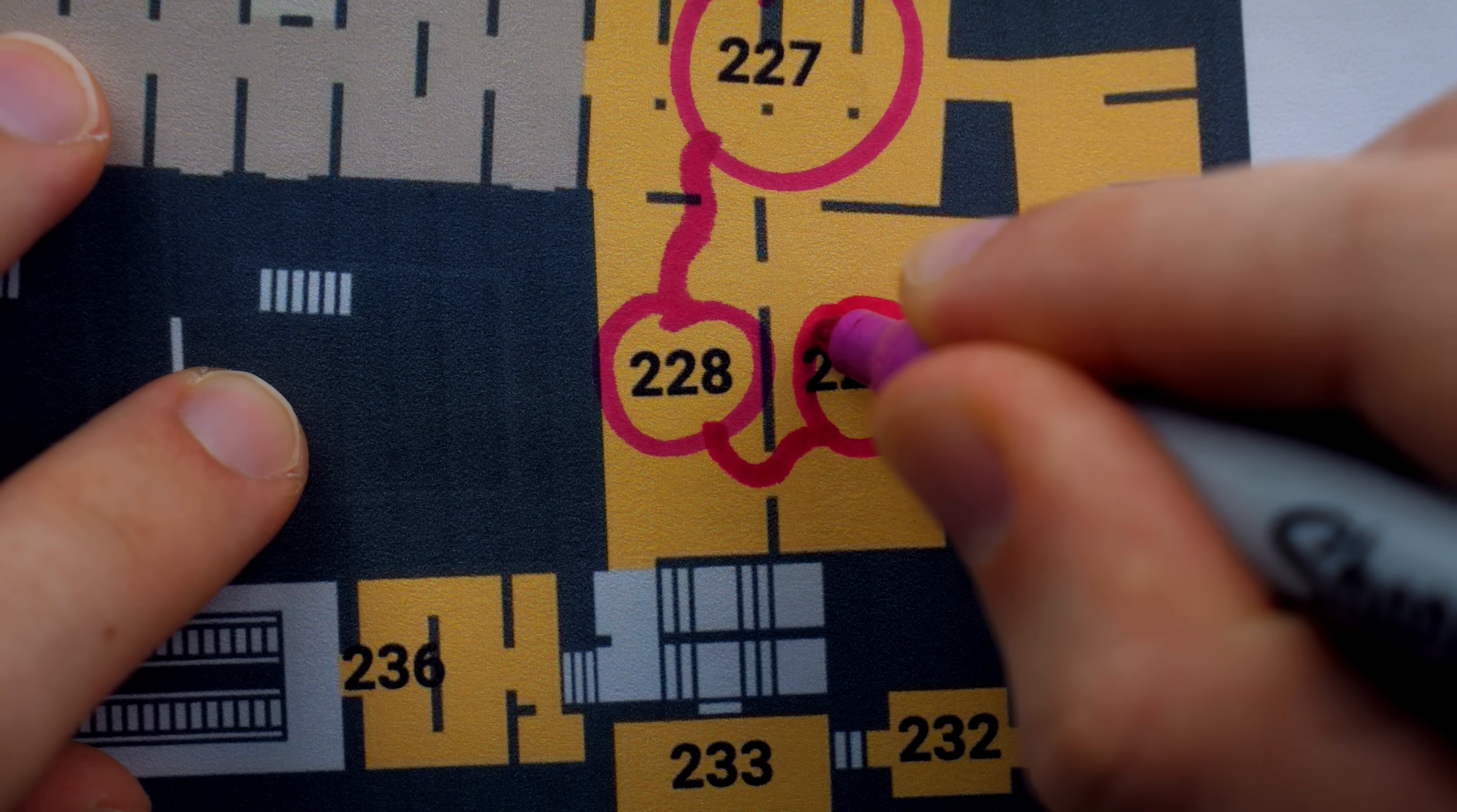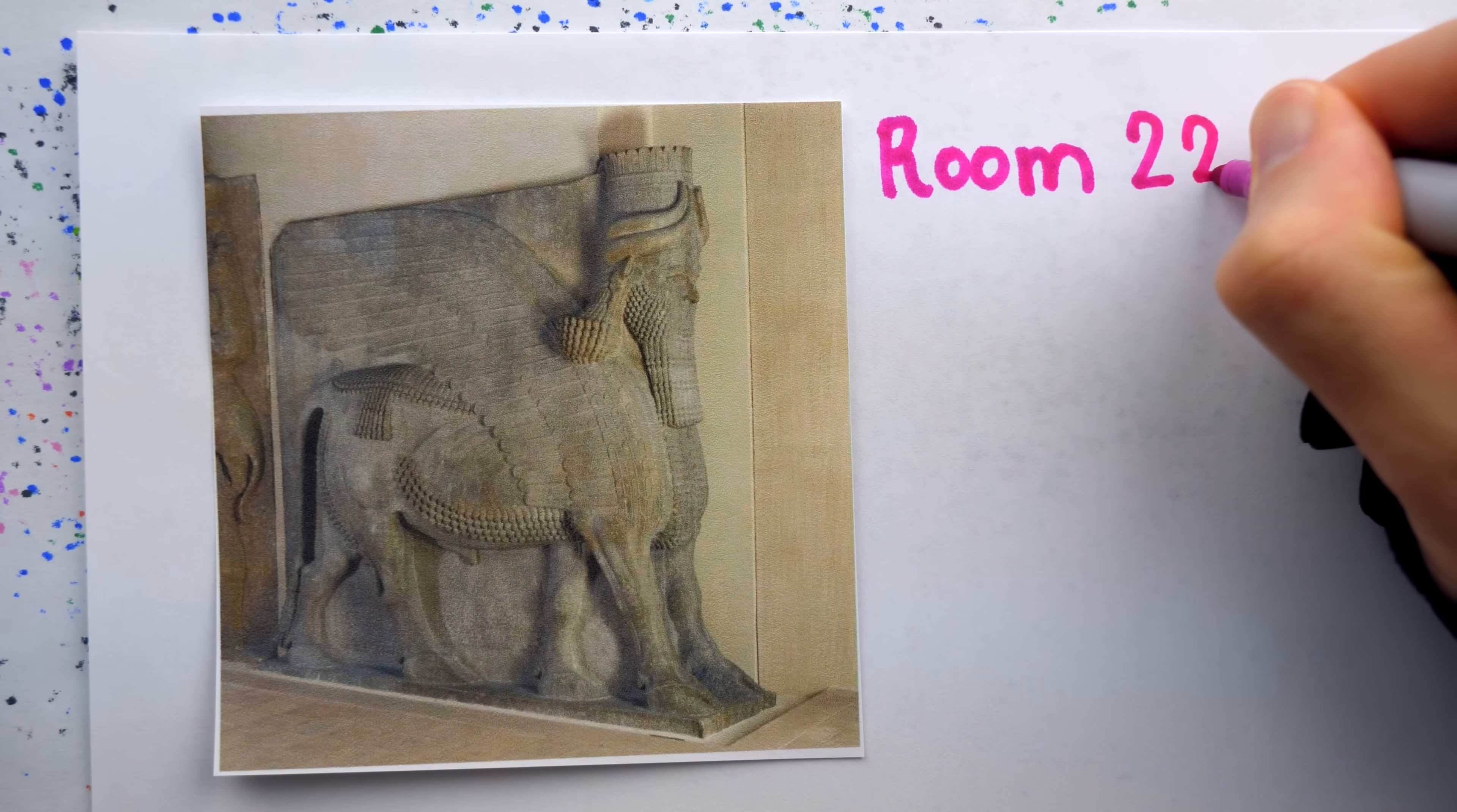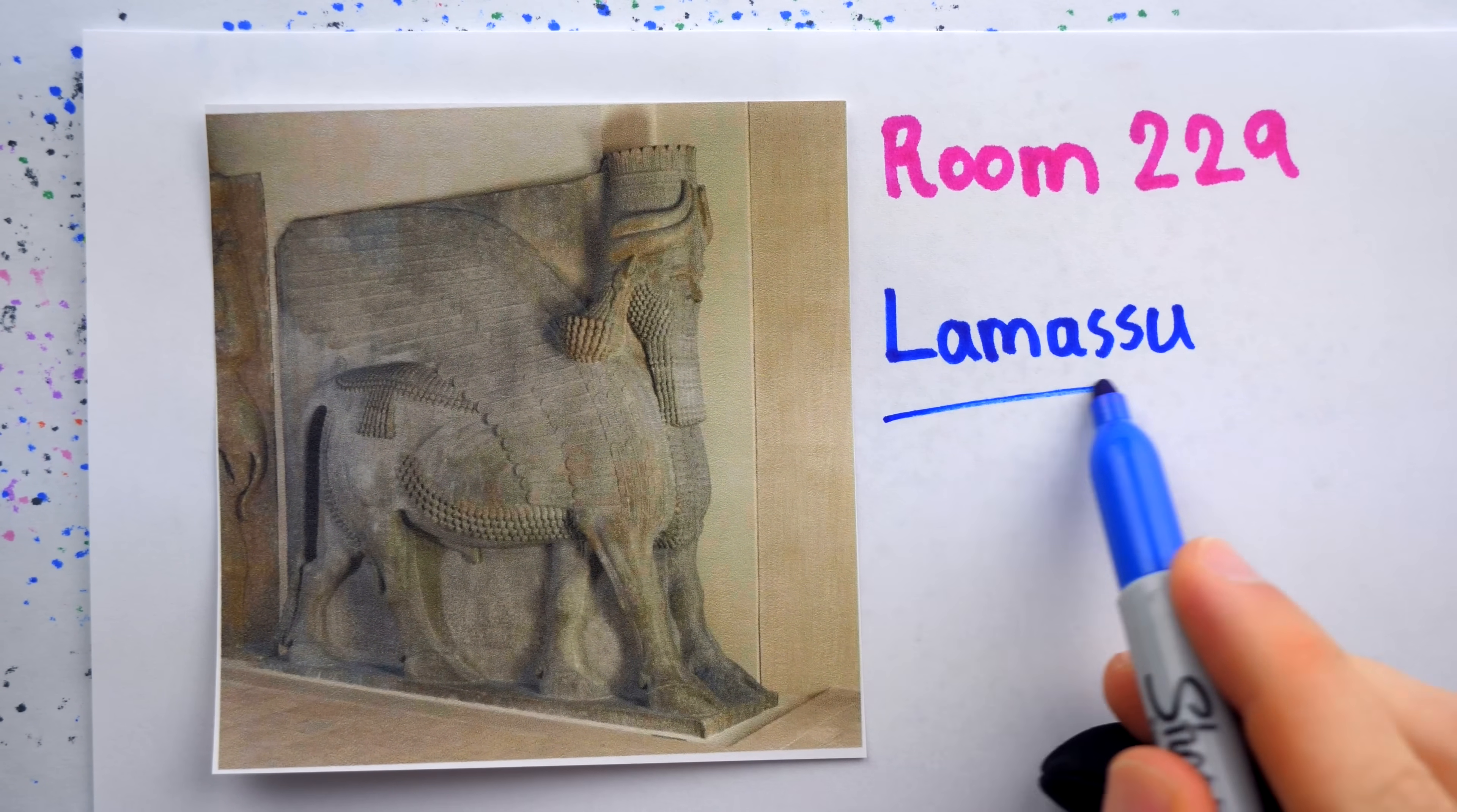Turning left into room 229, you'll find this incredible mural of a Lamassu, a winged, man-headed, five-legged bull wearing earrings, which was a protective deity to the Assyrian people.